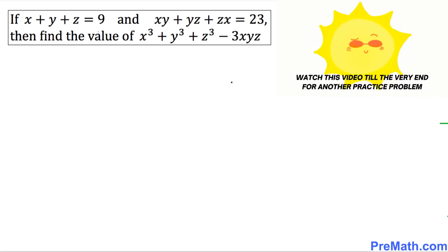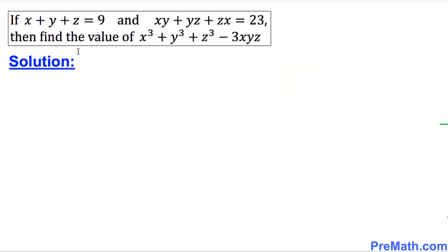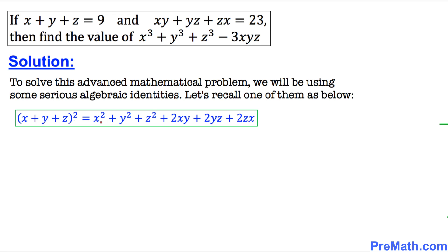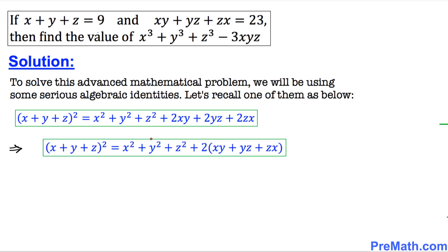To solve this advanced mathematical problem, we'll be using some advanced algebraic identities. One of them is: x plus y plus z, squared, equals x squared plus y squared plus z squared plus 2 times xy plus 2yz plus 2zx. Among these three terms, 2 is common, so we factor out 2, giving us x squared plus y squared plus z squared plus 2 times the quantity xy plus yz plus zx.